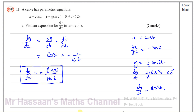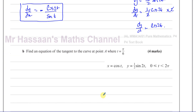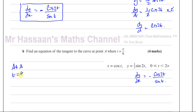dy/dx is of course the gradient function, which helps with the next part: finding the equation of the tangent to the curve at point A, where t equals π/6. So the gradient function, as we deduced, is equal to negative cosine of 2t over sine of t. At point A, t equals π/6, so the coordinates of A can be found by substituting t = π/6 into the parametric equations.